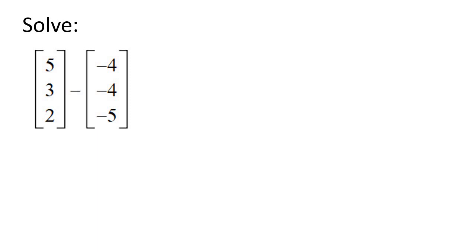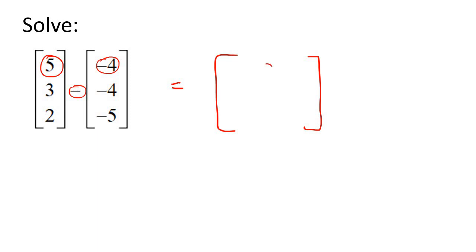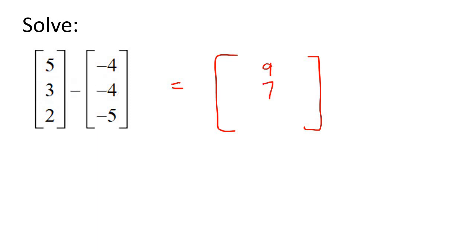Let's do subtraction. Subtraction is exactly the same. All that happens is you say, like, 5 take away negative 4, so that actually becomes 5 plus 4, which is 9. And then you're going to say 3 take away negative 4, so it's going to become 3 plus 4, which is 7. And then the last one, 2 take away negative 5 — the two negatives make a positive — so it ends up becoming 2 plus 5, which is 7.